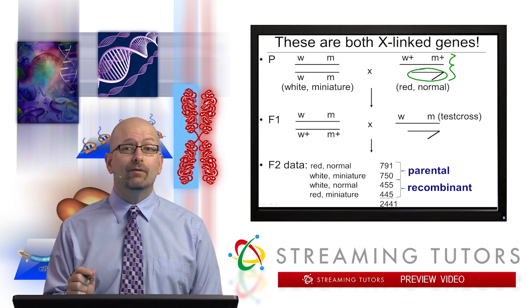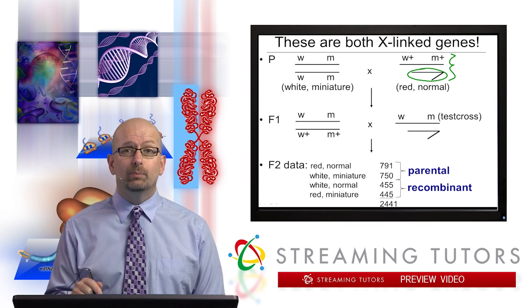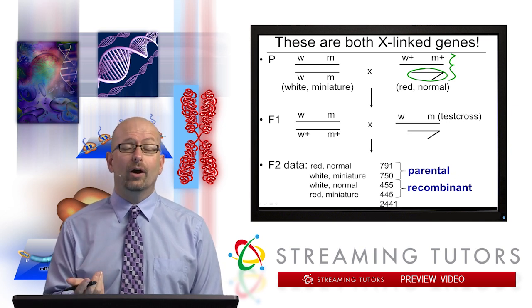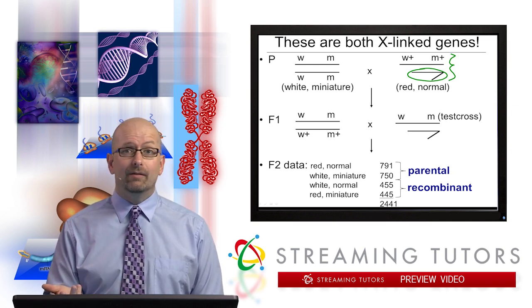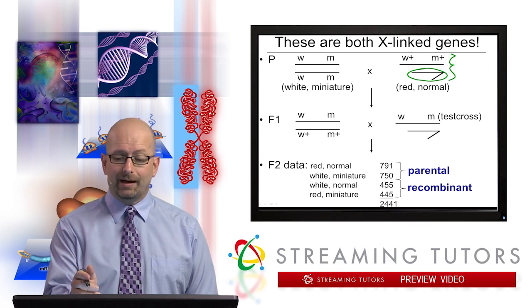Crossing over could never occur in a male with respect to the X and Y. Even though they're a homologous pair, they can never cross over. So the bottom line is we know what gametes we're getting from this father.